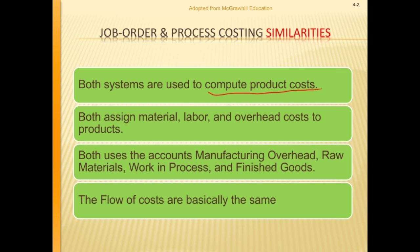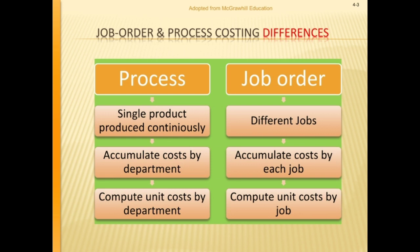Both systems also assign material, labor, and overhead costs to products. Both use the manufacturing overhead, raw material, work in process, and finished goods accounts in the journal entries. Finally, the flow of costs are basically the same. We now move on to the differences between job order and process costing.